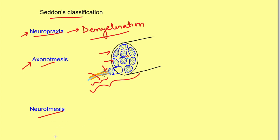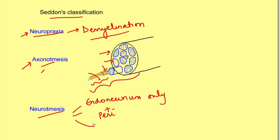The third level is neurotmesis. Neurotmesis is when the connective tissue sheaths are also disrupted along with discontinuity of the axon. In neurotmesis, there can be discontinuity of the endoneurium only while perineurium and epineurium remain intact, or discontinuity of endoneurium plus perineurium, or all three — endoneurium, perineurium, and epineurium — can all be disrupted. That is Seddon's classification: neuropraxia, axonotmesis, and neurotmesis.